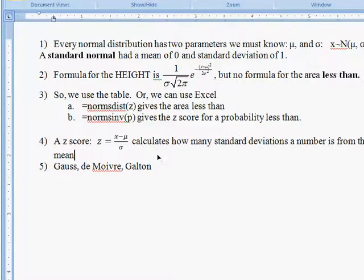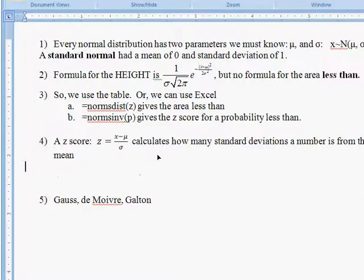So what's a z score? The formula for a z score: z equals some number minus the mean, minus that center of the normal distribution that you're looking at, divide it by the standard deviation. That calculates how many standard deviations some number is from the mean.